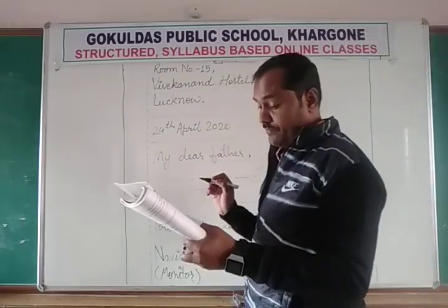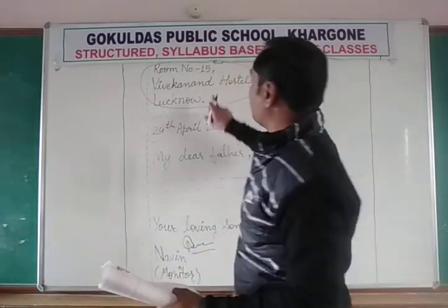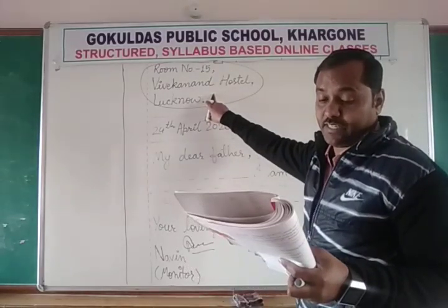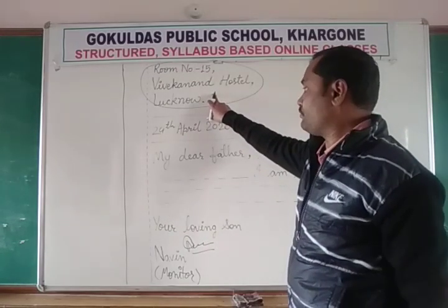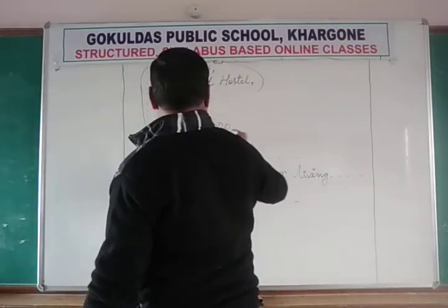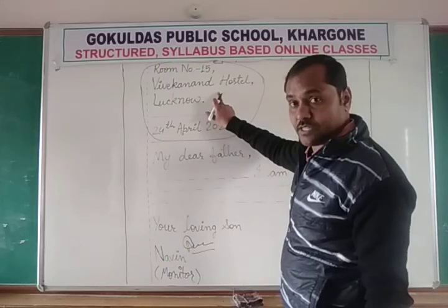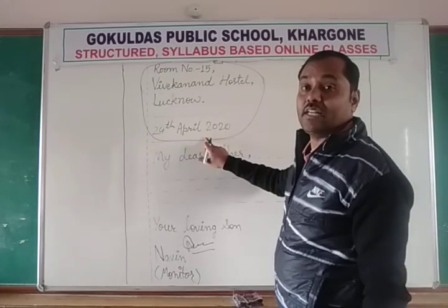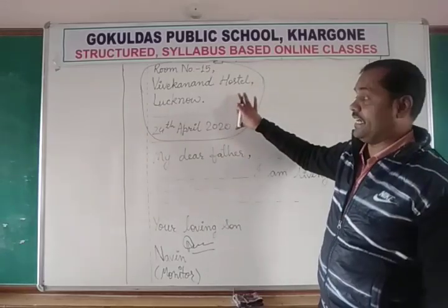First part is the heading of the letter. What does the heading include? It includes the place and date of letter writing — the address or place at which the letter is written, and the date on which it is written. That is called the heading of the letter.